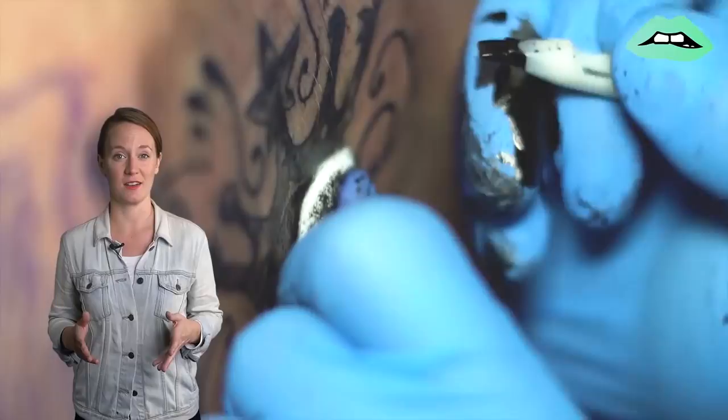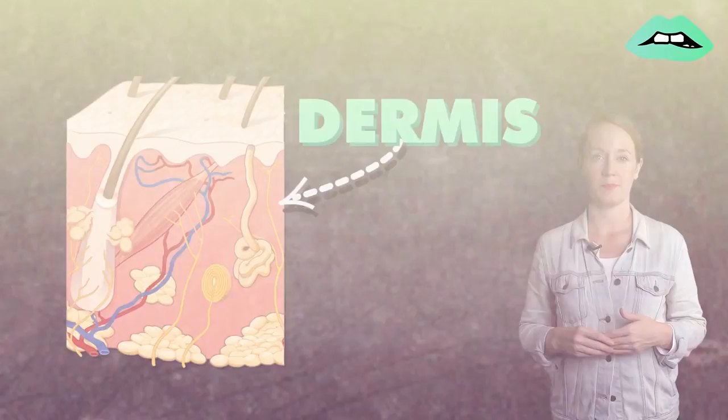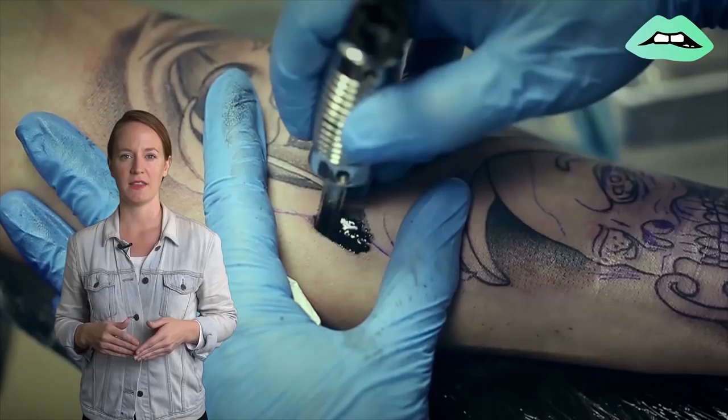Generally speaking, tattoos are permanent because the ink gets deposited in the dermis, a deeper layer of the skin that contains blood vessels, collagen fibers, and nerves. And this is done with a tattoo machine that uses tiny needles to puncture the dermis.